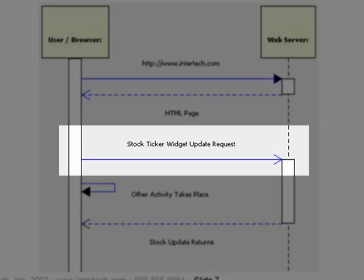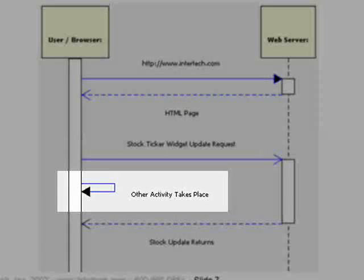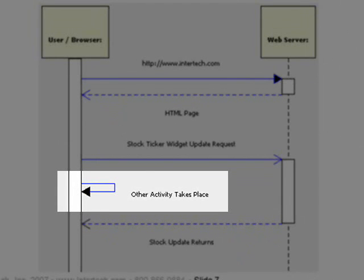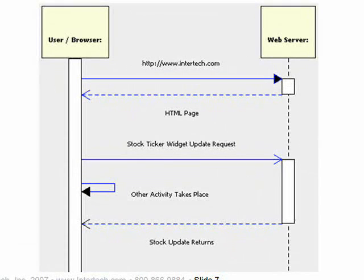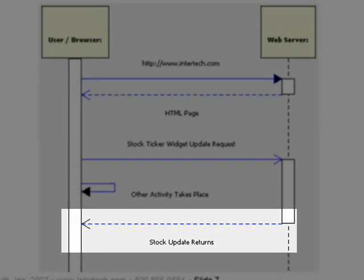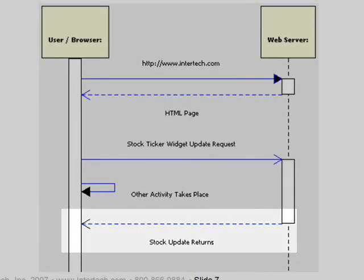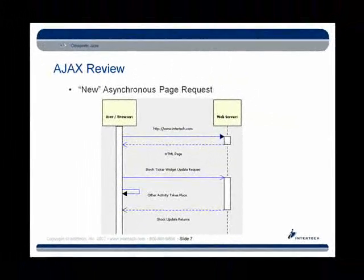When the stock ticker is being updated, we don't stop all other activity — we can still continue doing other things on the web page, like filling out a form or navigating through another widget. The important thing with Ajax is that we can continue working on the page while the request is sent out. When the response is eventually received, it's typically not an entire HTML document — usually it's a small bit of markup, or maybe just the raw data needed, and the browser repaints only the specific area that needs updating.